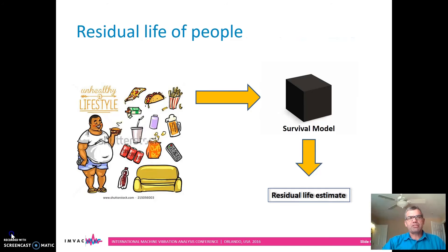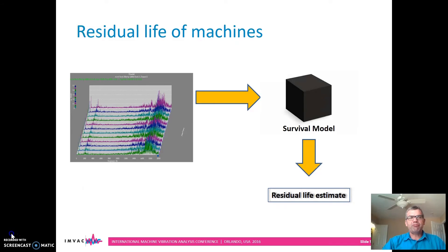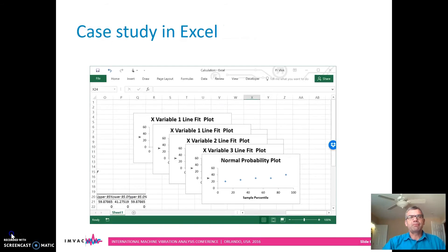What we're going to be talking about is how residual life of people is calculated by insurance companies. They look at lifestyles of people, put that into a survival model, and then calculate residual life. We're going to do exactly the same thing for machines by using vibration signatures — put that into a survival model and then calculate a residual life estimate.